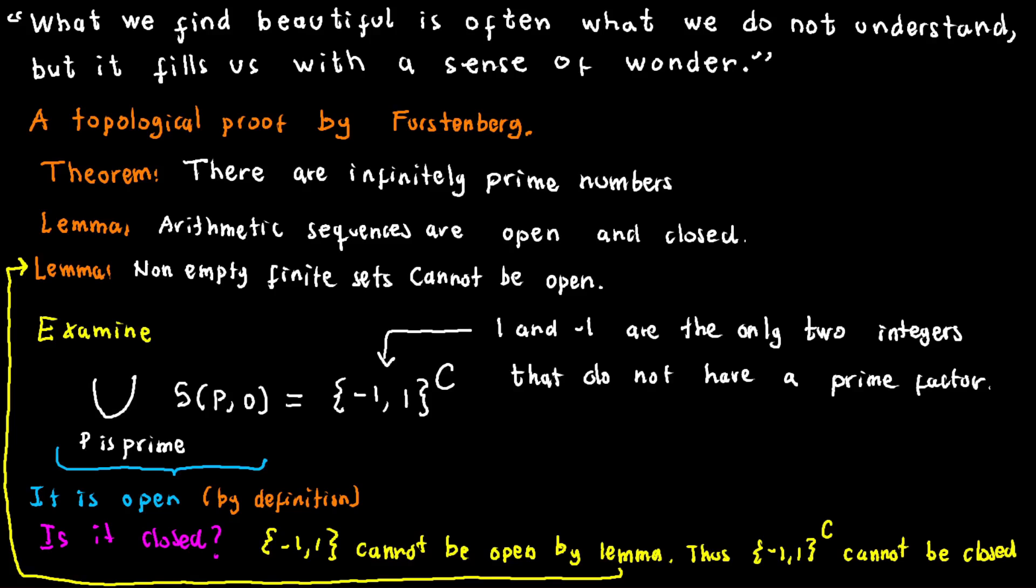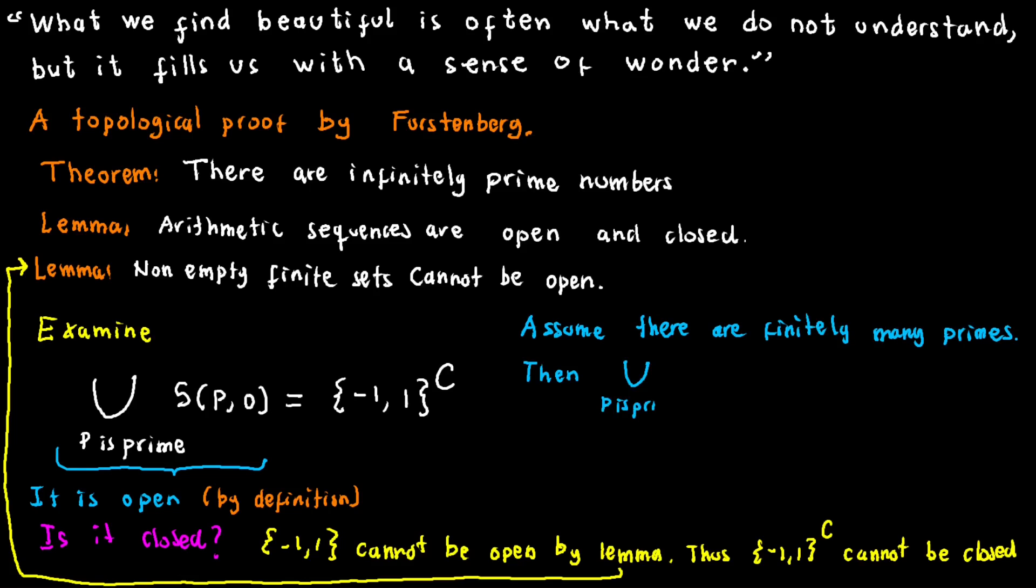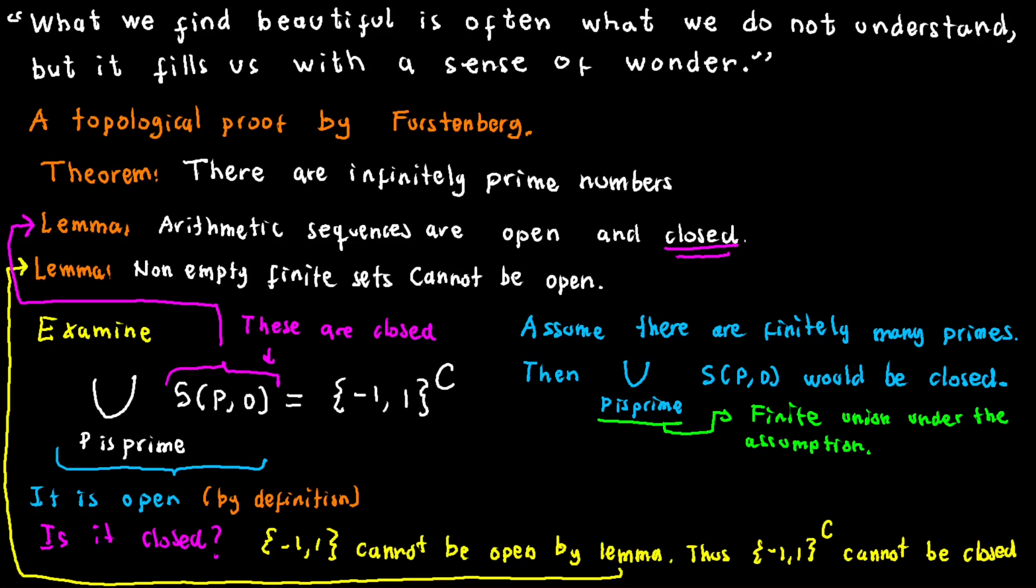Now, for the sake of a contradiction, let's assume that there are only finitely many primes, considering that every element in the union corresponds to an arithmetic progression, and that arithmetic progressions are known to be closed. Under this hypothetical scenario of finite primes, we would assert that the union itself is closed.